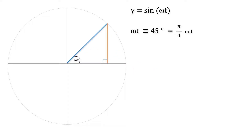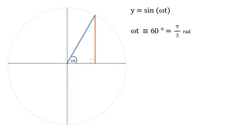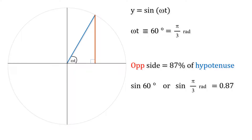At 45 degrees or pi over 4 radians, the sine of that is equal to 0.71, so the opposite side is 71% as long as the hypotenuse — and that's no matter how long the hypotenuse is, that's always true. The sine of 60 degrees or pi over 3 radians gives a sine function value of 0.87.